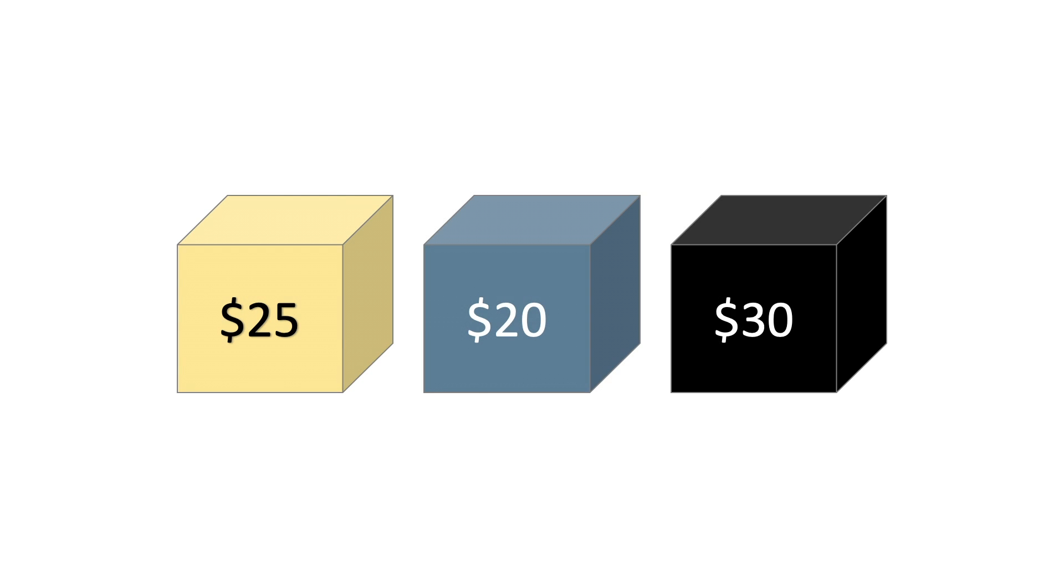For this demo, we'll be working with a very simple problem which goes like this. We have three boxes and they cost $25, $20, and $30. We can buy as many as we want and we have $50 to spend. If we want to spend as close to $50 total as possible, which boxes should we buy?